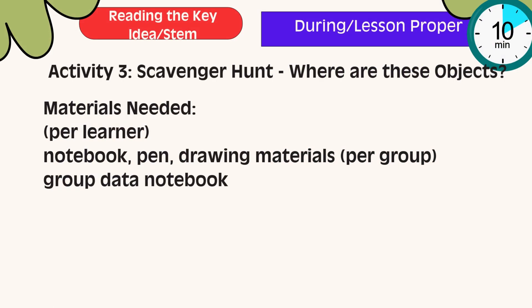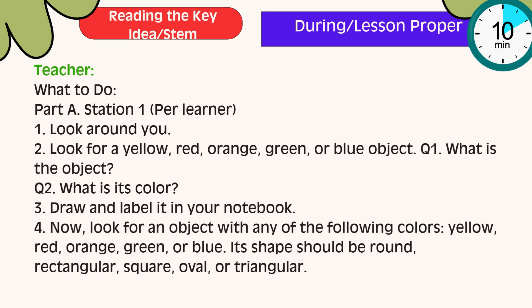Activity 3 – Scavenger Hunt: Where are these objects? Materials needed per learner: notebook, pen, growing materials, and group data notebook. Part A, Station 1: Look around you and find a yellow, red, orange, green, or blue object. Answer Question 1: What is the object? Answer Question 2: What is its color? Then draw and label it in your notebook.